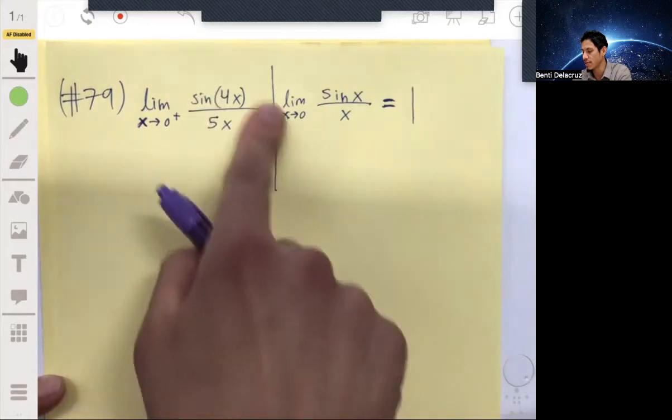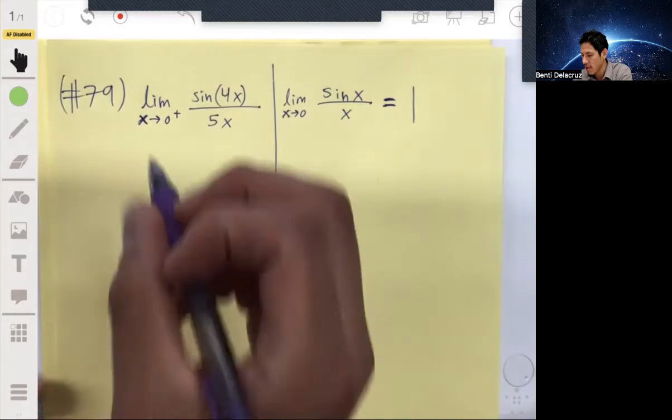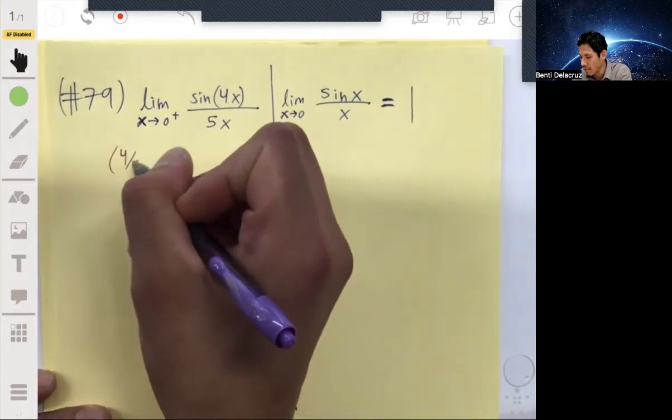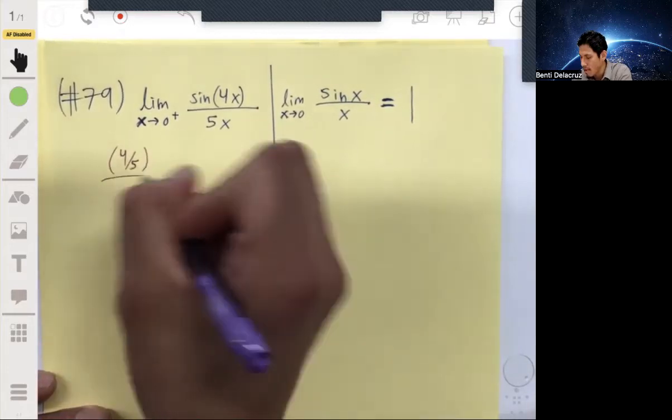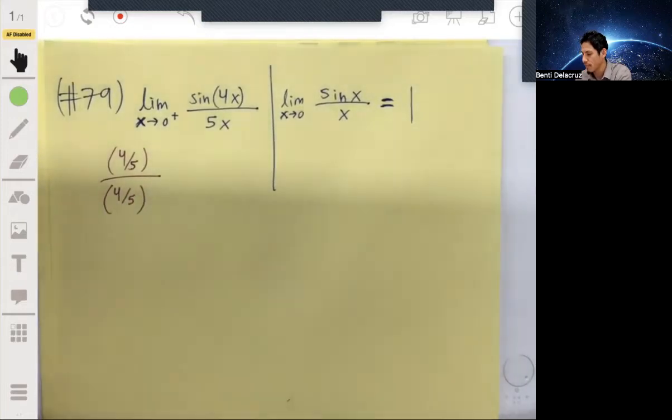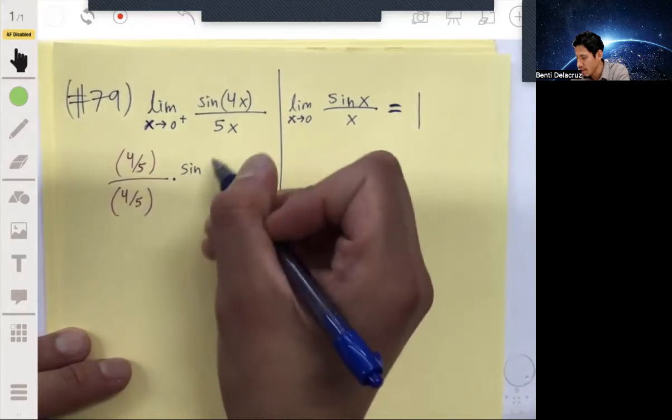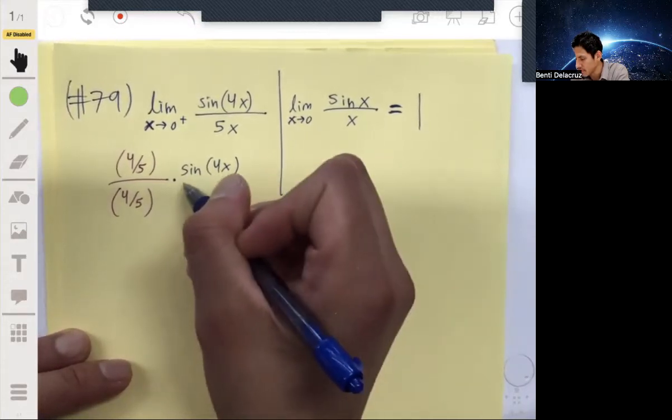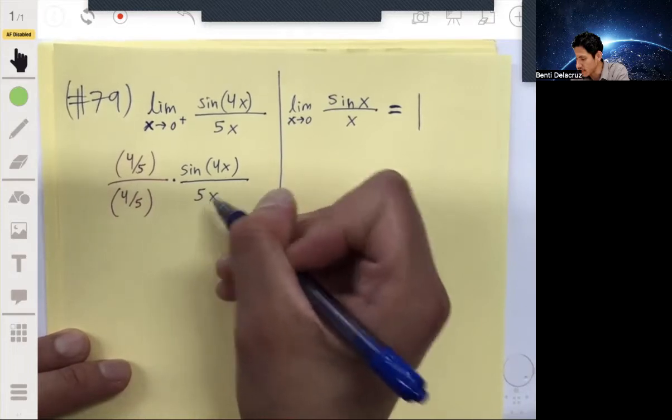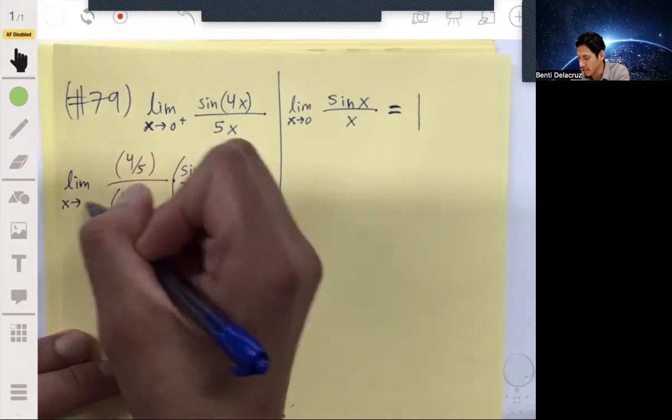So what we're going to do is multiply this by an interesting form of one. I'm going to multiply this by four-fifths over four-fifths times sin(4x) over 5x. This whole thing is being multiplied by that, and then we solve the limit as x approaches zero.